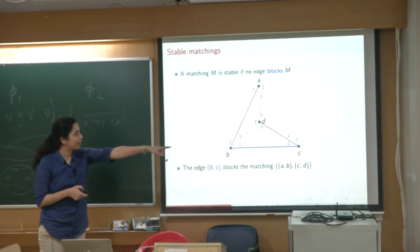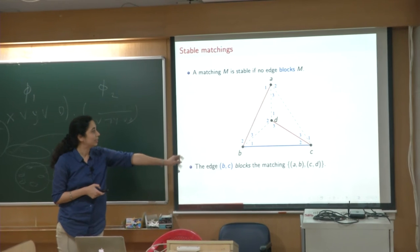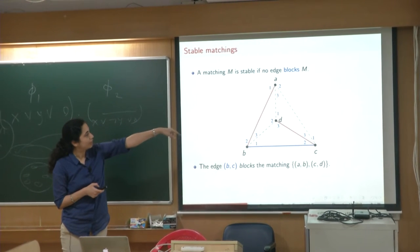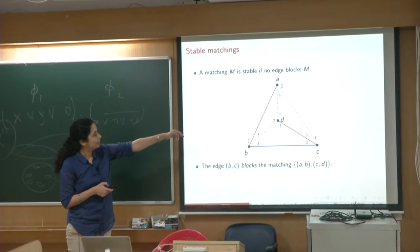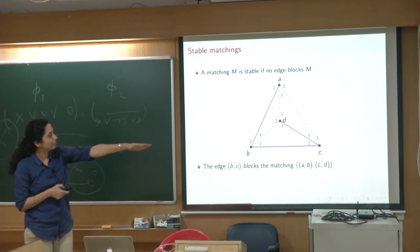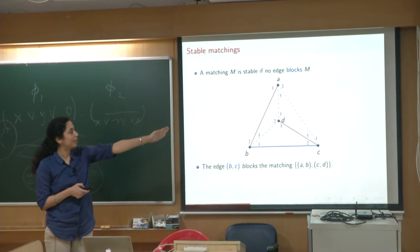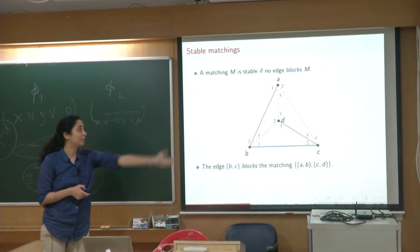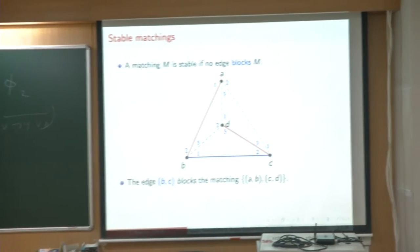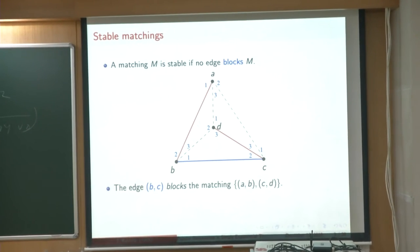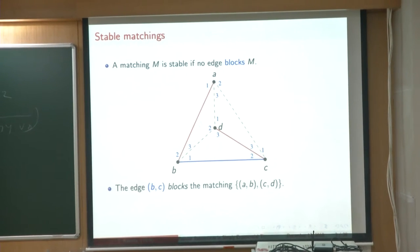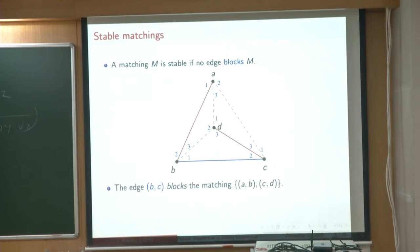For instance, if you look at the red matching, the pair B, C would rather be matched to each other than to their respective partners — B is currently matched to A but prefers C to A, and C is matched to D but prefers B to D. So B and C would rather be matched to each other than what the red matching assigns them. Thus, the red matching is not a stable matching.